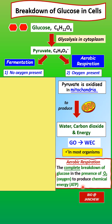This process occurs in most organisms. The main aim is to produce chemical energy stored in ATP for cellular activities.